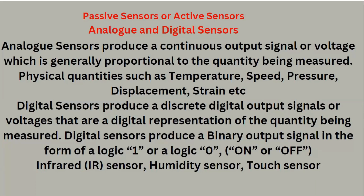We divide sensors into two groups: passive and active, or better called analog and digital sensors. An analog sensor produces a continuous output — voltage is generally proportional to the quantity being measured — for physical quantities such as temperature, speed, pressure, displacement, strain, etc. A digital sensor produces a discrete digital output — a binary representation of zero and one, or off and on. In this category we have infrared IR sensors, humidity sensors, and other types.